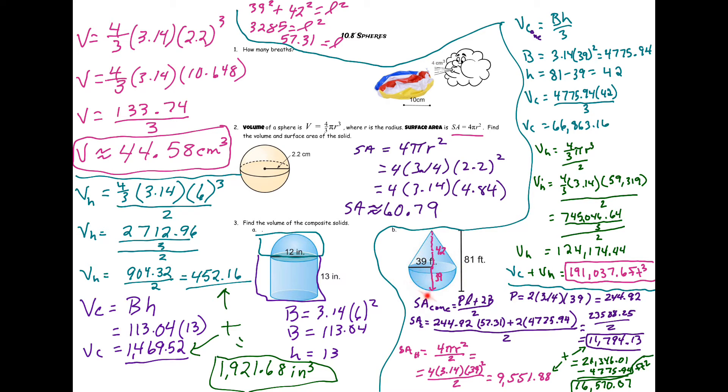So my L is 57.31. Circumference of this circle right here, just 2 pi r, which we get 244.92. So then just plugging it into the formula, P times our slant height, which is 57.31, plus 2 times our area of the base, 4775.94. And then divided by 2 gives us a surface area of 11,794.13 for the cone.